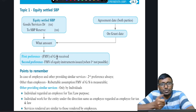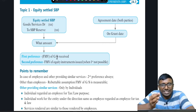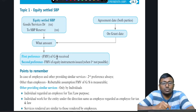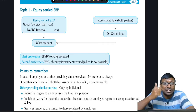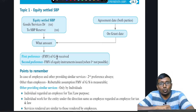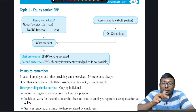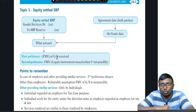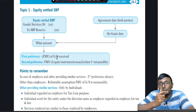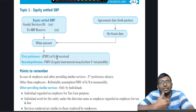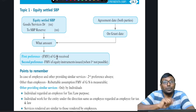Grant date means the date of agreement between the company and the other party — the rate on that date is fixed. Regarding valuation: first preference is always the fair market value of the goods or services received. Second preference — when you cannot measure the goods or services reliably — is the fair market value of the share option. For employees, since we cannot reliably measure the fair value of their services, we always use the fair market value of the share option on the grant date.